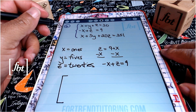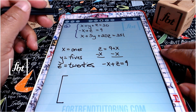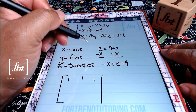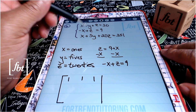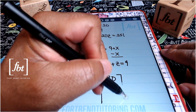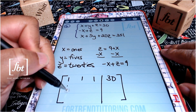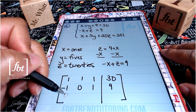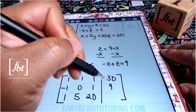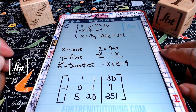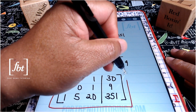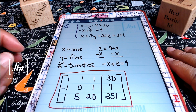Now we're ready to write our augmented matrix. Opening it up, we write down the coefficients from our system. The first row is one, one, one, with vertical bar, and constant 30. For the second equation we have negative one, zero, one, and nine — note the zero placeholder because y is missing from that equation. For the third equation, you'll have one, five, 20, and 351 to complete your augmented matrix. Red box it — putting your answers in a red box makes it easier for you and your instructor to identify where your answer is.